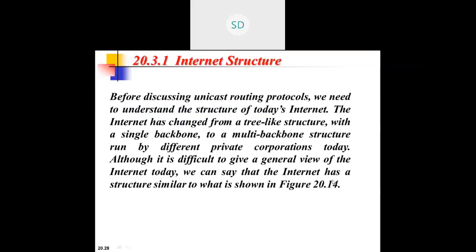Before discussing the unicast routing protocol, we need to understand the structure of today's internet. The internet has changed from a tree-like structure — originally there was a single backbone — to a multi-backbone structure run by different private corporations. Now there is no single backbone; multiple corporations provide services, making the internet structure quite complicated.